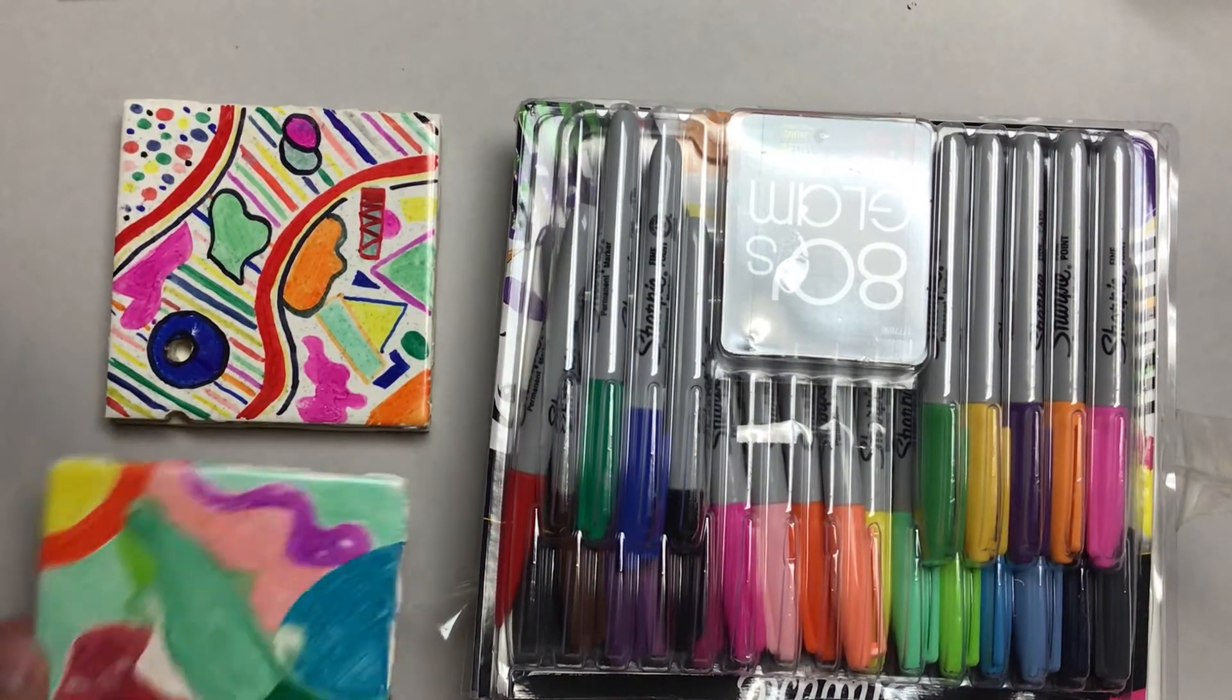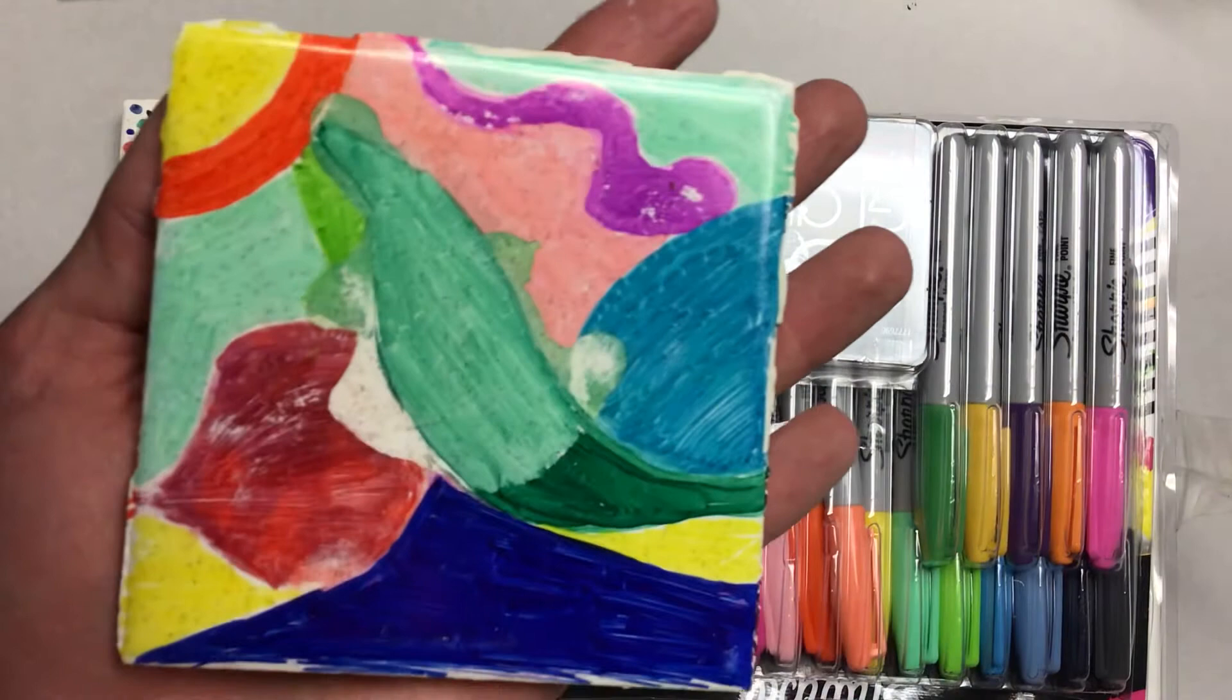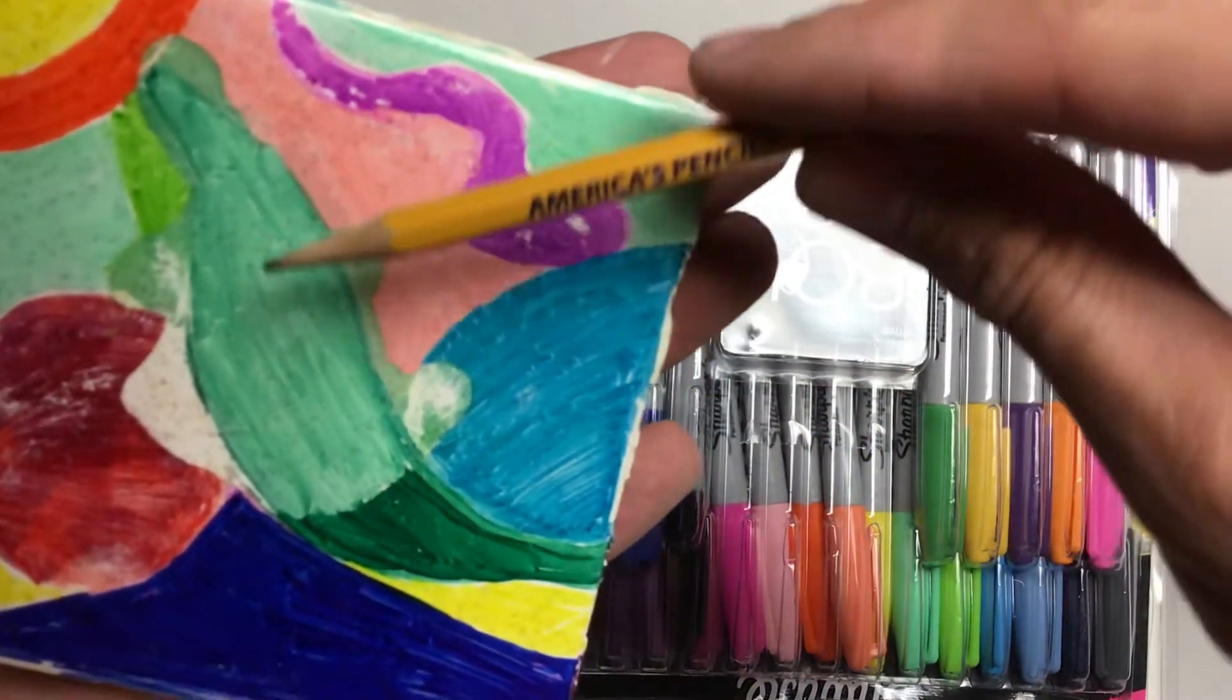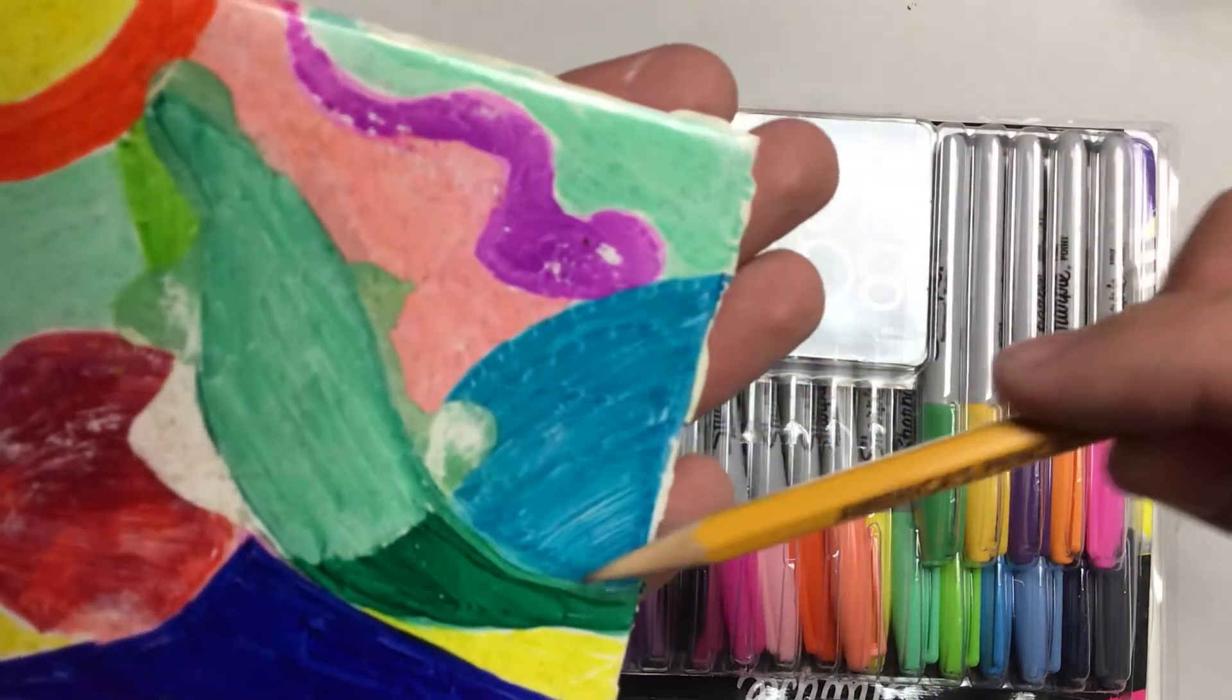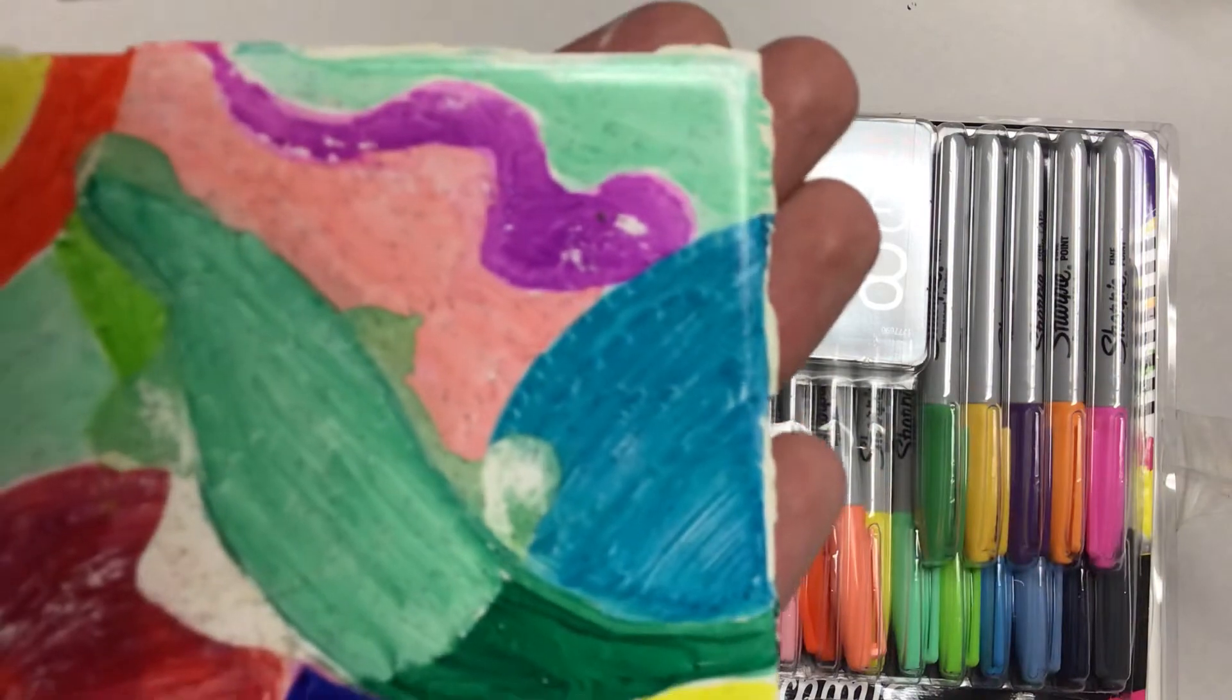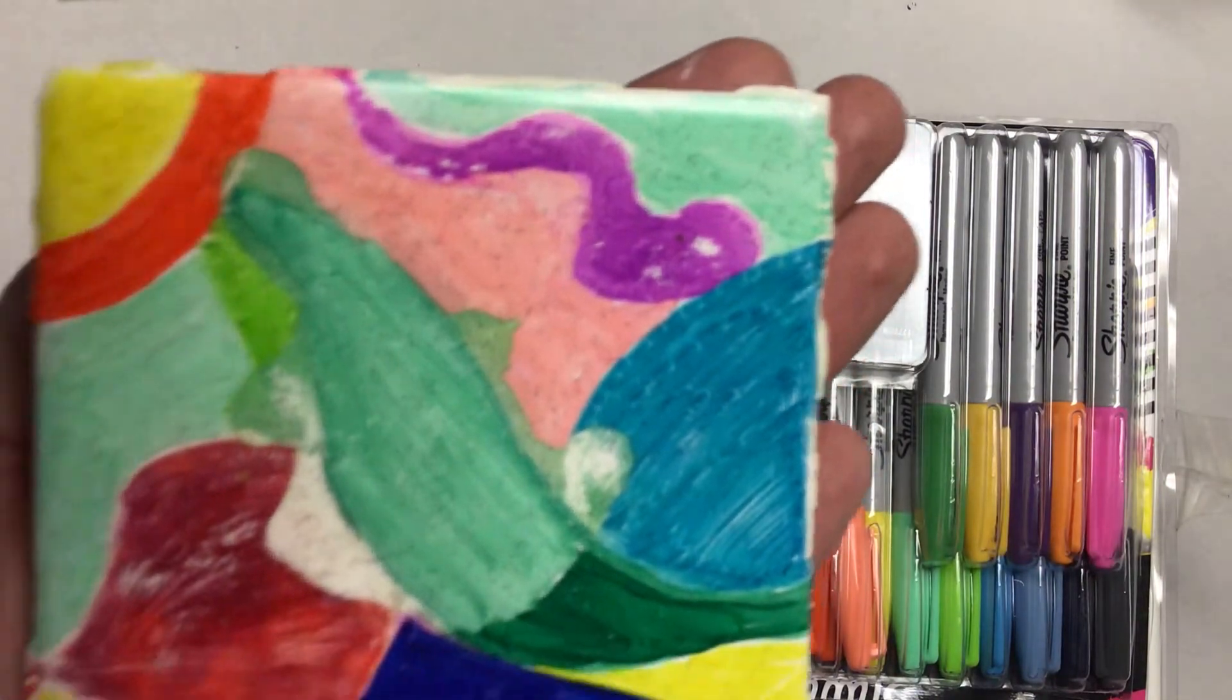This one here has several more colors. Something you should know is that a lot of times these Sharpies will leave streak marks where we color, so the direction that you're coloring might have these streaks. You need to keep that in mind while you're coloring and even while you're making your design.